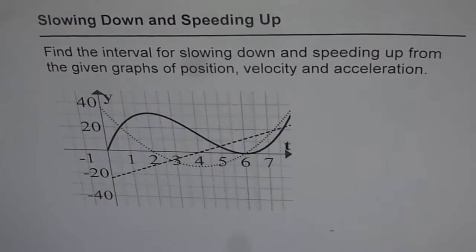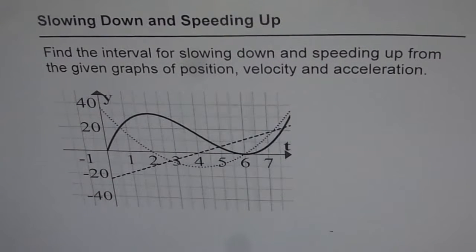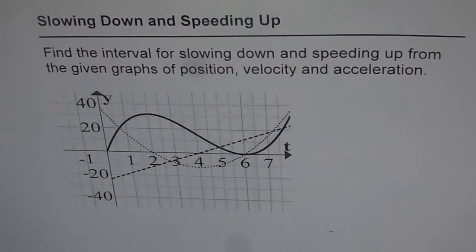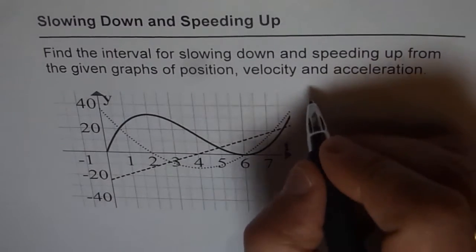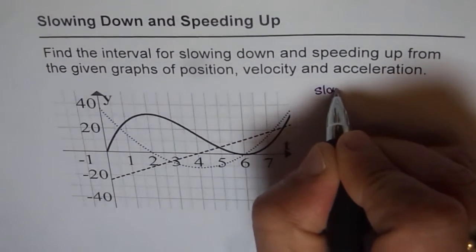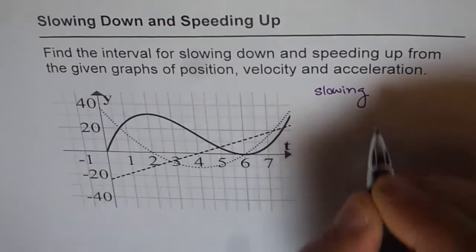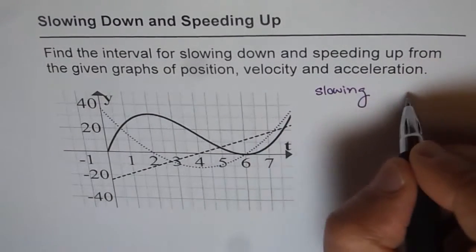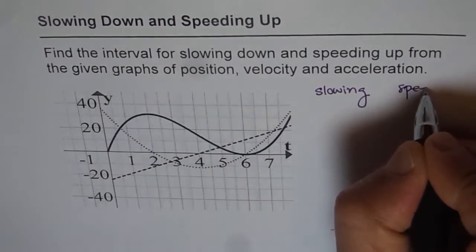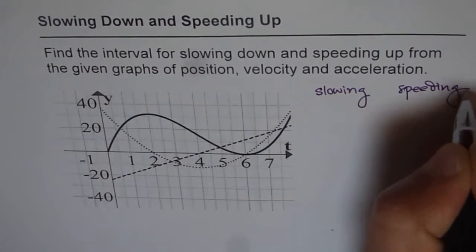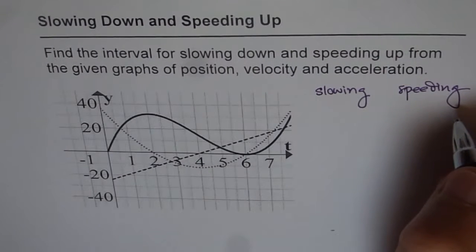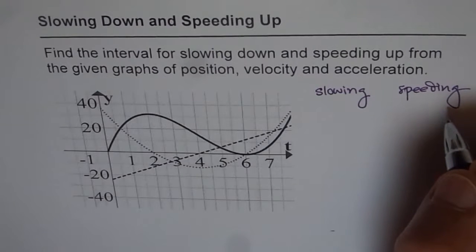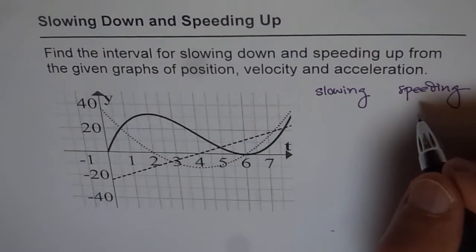Slowing down and speeding up. Find the interval for slowing down and speeding up from the given graph of position, velocity, and acceleration. For slowing down, what is important to understand? We have two aspects: one is slowing, and the other one is speeding up. How can you relate position, velocity, and acceleration with slowing and speeding up?